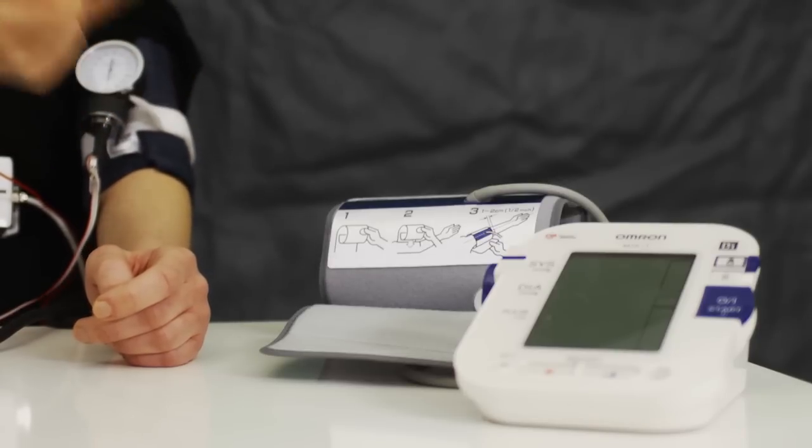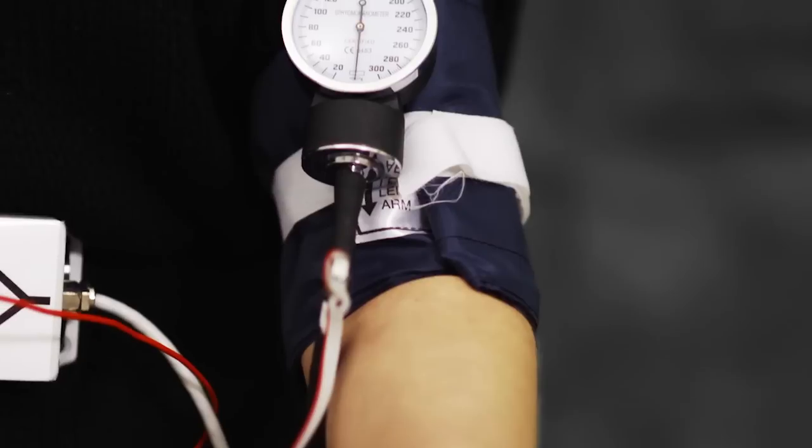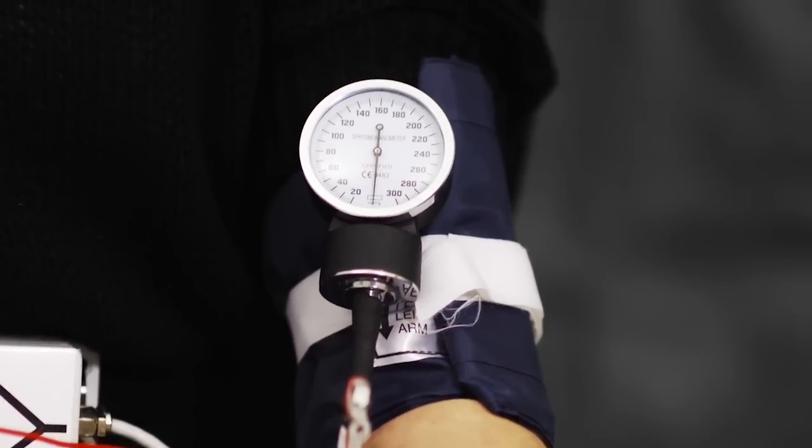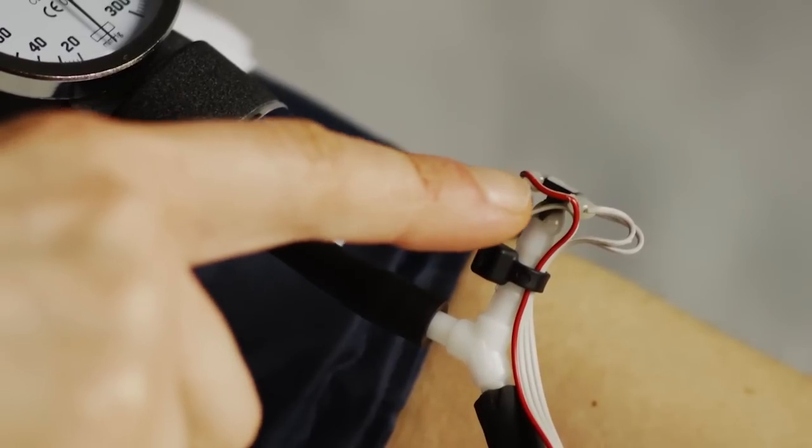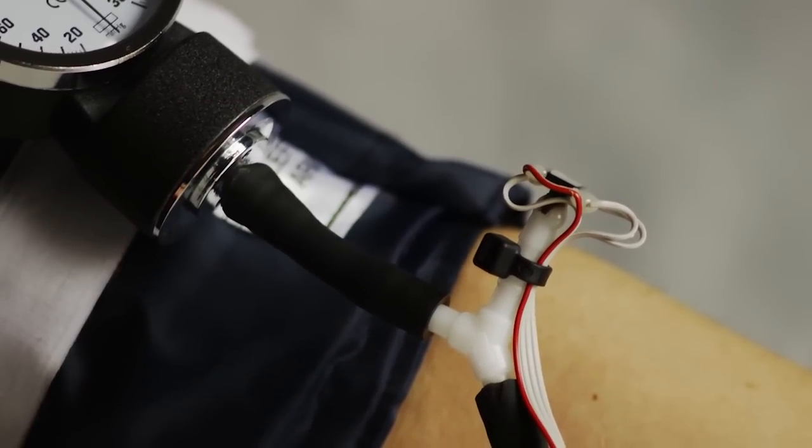Instead of actually using this fully automatic blood pressure meter, we will simulate its measurement process with the help of this more traditional blood pressure meter. What we have done here is that we have attached this electronic pressure sensor that you can see here, which is identical to the one found in the automatic blood pressure meter.